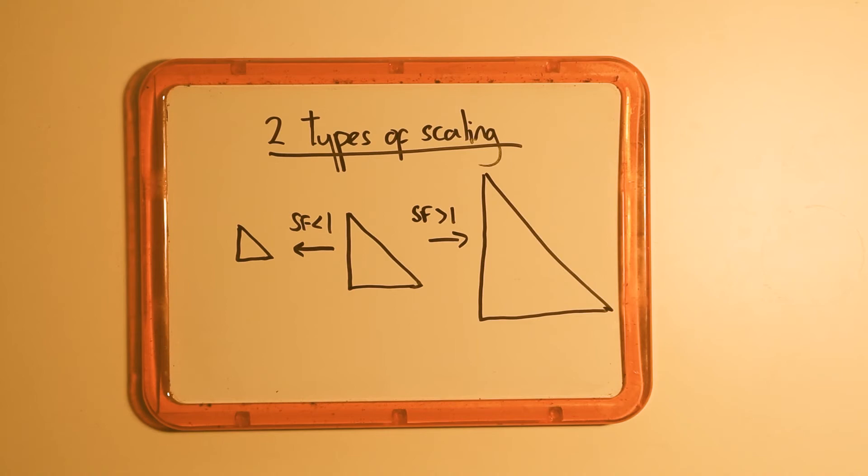For example, a scale factor of 2 doubles the shape size, whereas a scale factor of 0.5 halves it.